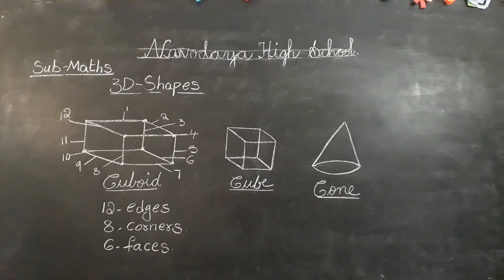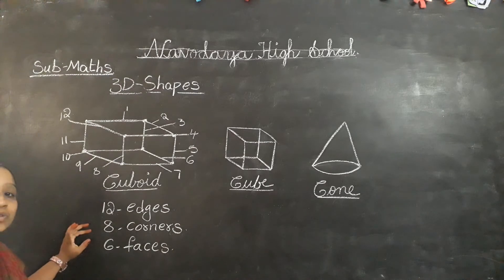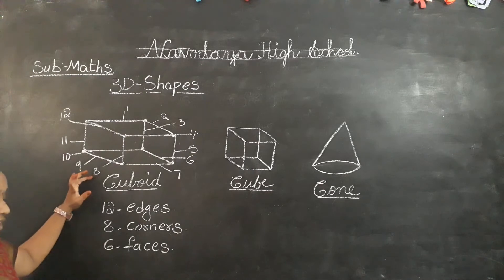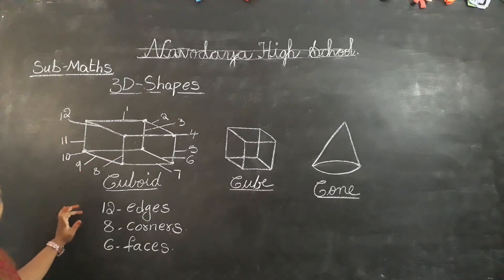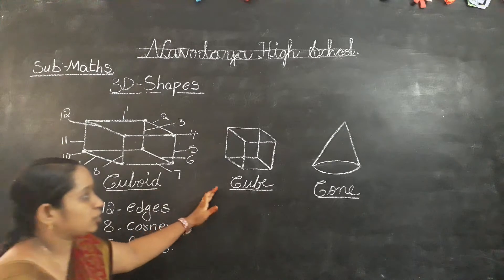Every 3D shape has faces. Faces are 2D shapes — they look like 2D plane shapes. Now next one.